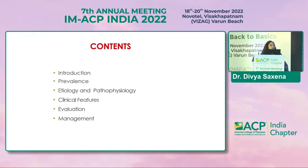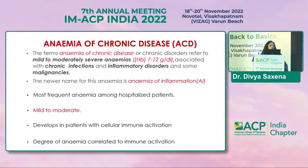My topic will be discussed under the following subtopics: certain points about anemia of chronic infections, prevalence, etiology and pathophysiology, clinical features, evaluation, and how to manage anemia of chronic infections. Anemia of chronic disease is a mild to moderate severe anemia with hemoglobin ranging between 7 to 12 grams per deciliter. It is usually associated with chronic infections, inflammatory disorders, and some malignancies. The newer terminology given to this kind of anemia is anemia of inflammation.